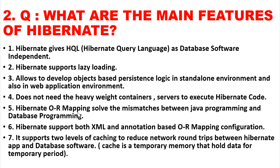Hibernate ORM mapping solves the mismatches between Java programming and database programming — the table we have created or model class will always be checked by the Hibernate framework. Hibernate supports both XML and annotation-based ORM mapping. For ORM mapping we can create configuration files or use annotations. It supports two levels of caching to reduce the network round trips between Hibernate and the database — Level 1 cache and Level 2 cache.